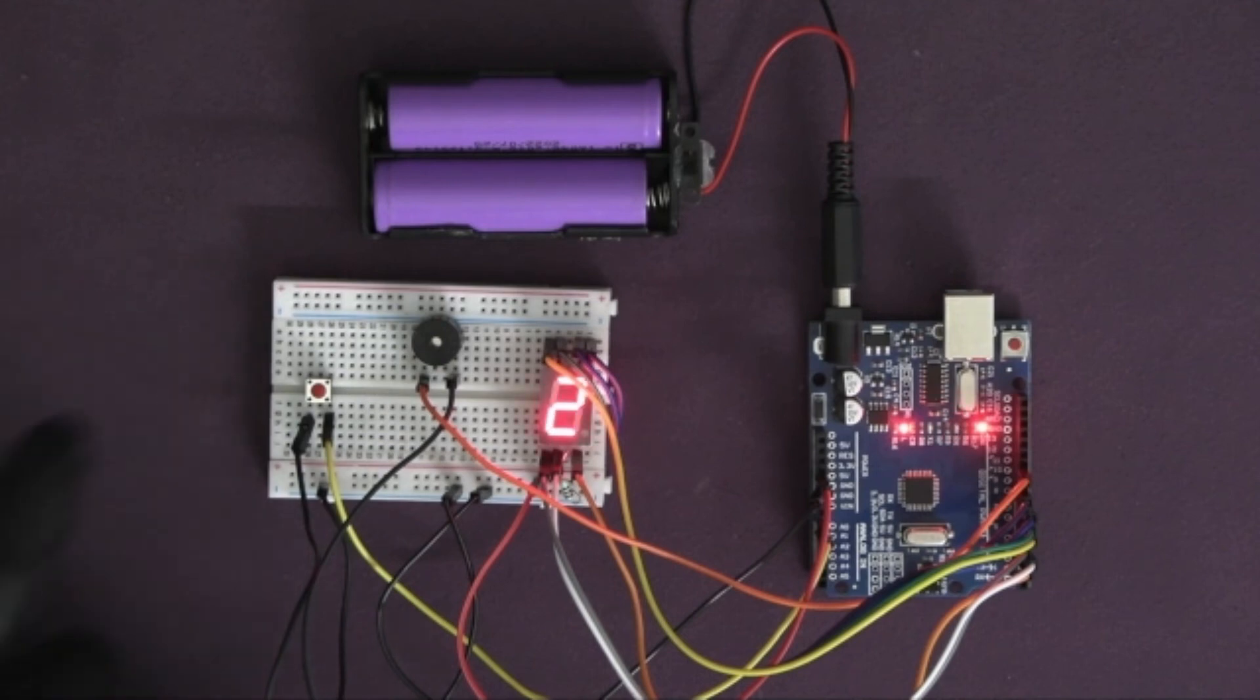You can hear the buzzer beep quickly, adding to the effect of a rolling dice. This is our final dice roll result. The number could be anything between 1 and 6, just like a real dice.